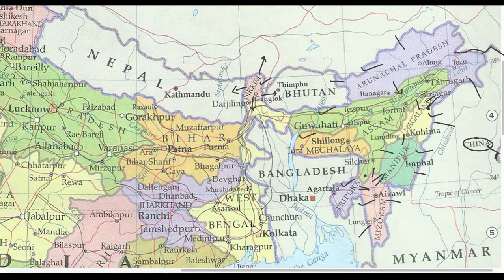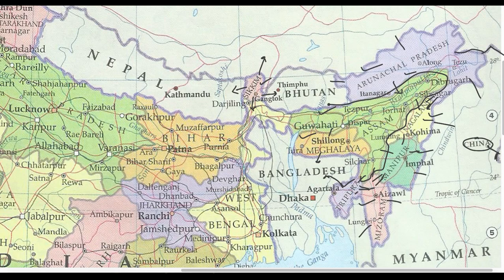Tripura has international borders with Bangladesh only. Meghalaya has international borders with Bangladesh and regional borders with Assam. Importantly, Assam is the only state in Northeast India that shares borders with all other northeastern states — Arunachal Pradesh, Nagaland, Manipur, Mizoram, Tripura, Meghalaya — and also with West Bengal, with international borders with Bhutan only.